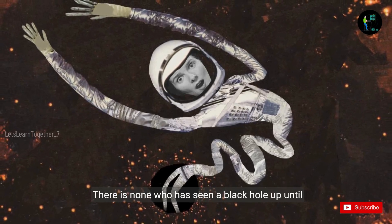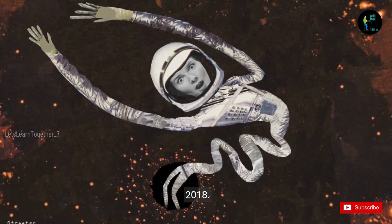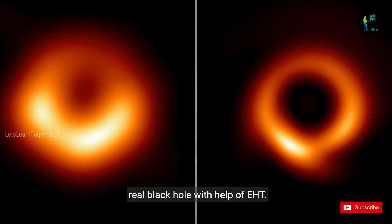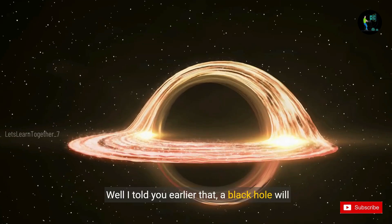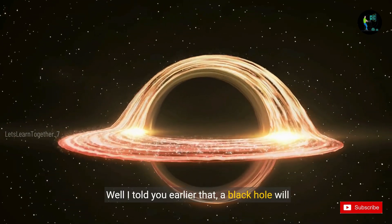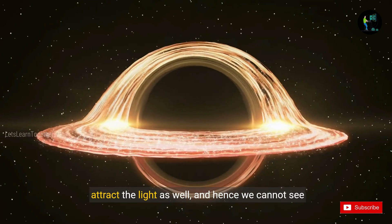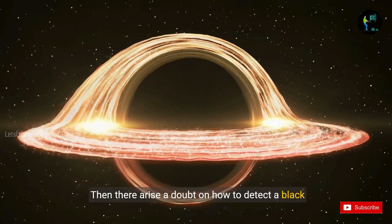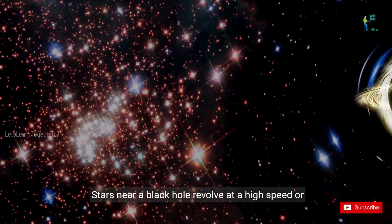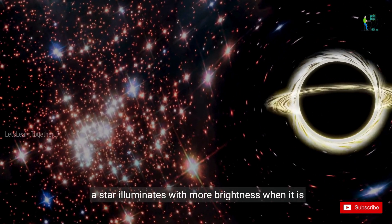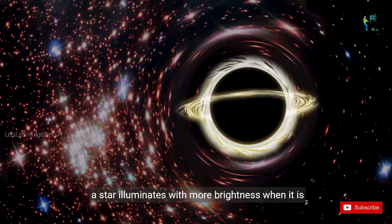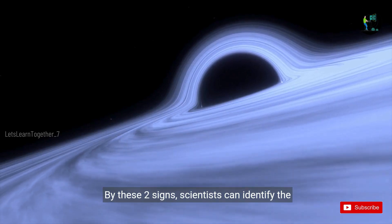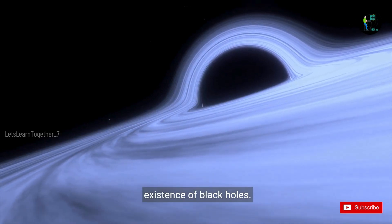There is none who has seen a black hole up until 2018. But in April 2019, our scientists witnessed a real black hole with help of the Event Horizon Telescope. Well, I told you earlier that a black hole will attract the light as well, and hence we cannot see a black hole. Then there arises a doubt on how to detect a black hole. Stars near a black hole revolve at a high speed, or a star illuminates with more brightness when it is going into a black hole and releases X-rays. By these two signs, scientists can identify the existence of black holes.